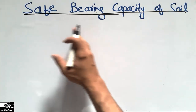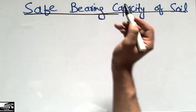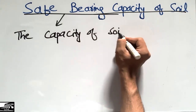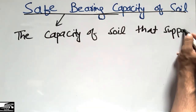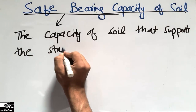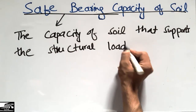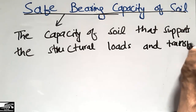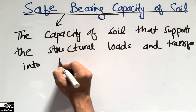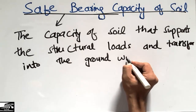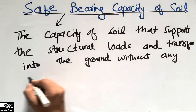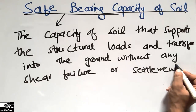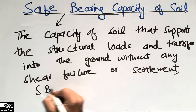I will mention the different types of soil with their different bearing capacities. The safe bearing capacity of the soil is defined as the capacity of the soil that supports the structural loads coming on the soil and transfers this load into the ground without any shear failure or settlement of the soil.